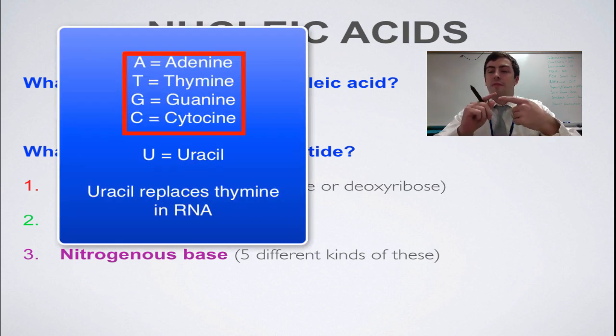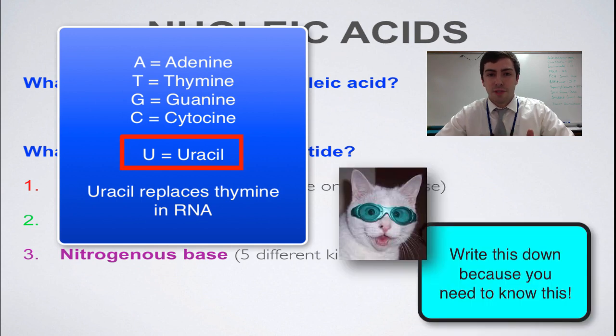In DNA, you have adenine, thymine, cytosine, and guanine. And in RNA, instead of thymine, you have uracil. Write that down, make a note, alright?